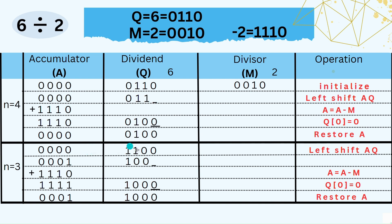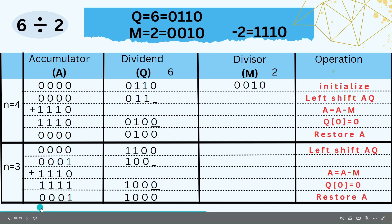For N = 3, we have A = 0000 and Q = 1100. Performing left shift AQ gives A = 0001 and Q = 100 with an empty bit. Subtracting M (adding 2's complement of M) gives A = 11111. Since the MSB of A is 1, the step is unsuccessful. We set Q0 = 0 and restore A. At the end of N = 3, we have A = 0001 and Q = 1000.